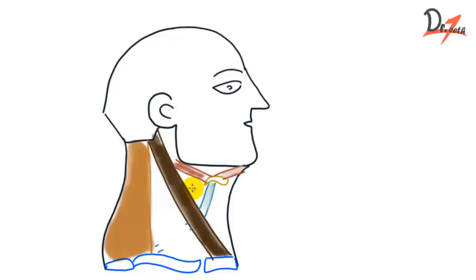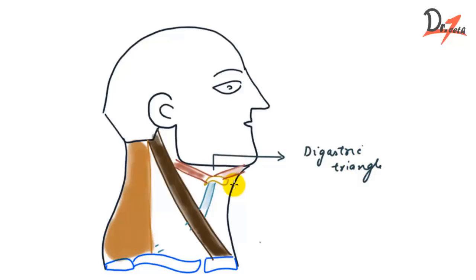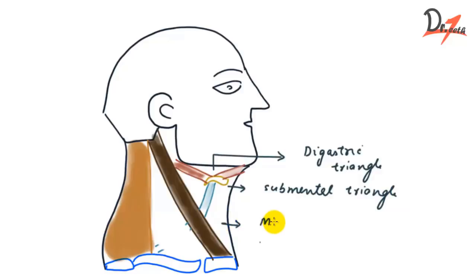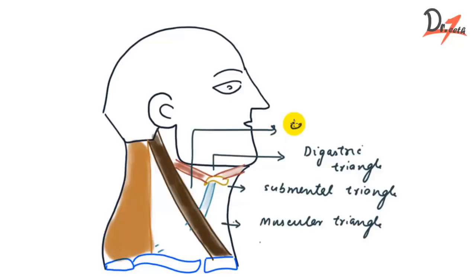Our anterior triangle is divided into smaller triangles. This triangle right here is the digastric triangle. Then a triangle formed here — when you see from the front — that is the submental triangle. Then we have the muscular triangle. And this triangle is called the carotid triangle. So from one anterior triangle we get four smaller triangles, formed by these small muscles.